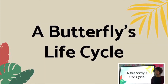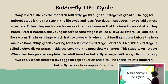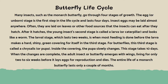Now that we've learned about a frog's life cycle, we're going to look at a butterfly's life cycle. Many insects, such as the monarch butterfly, go through four stages of growth. The egg or unborn stage is the first step in the life cycle and lasts four days. Insect eggs may be laid almost anywhere — often they are laid on leaves or other food sources that the insects can eat after they hatch.